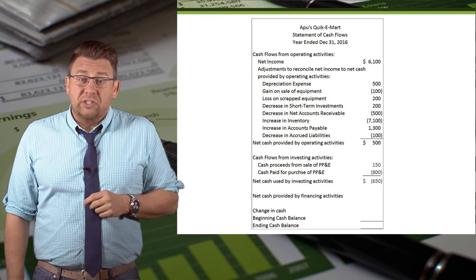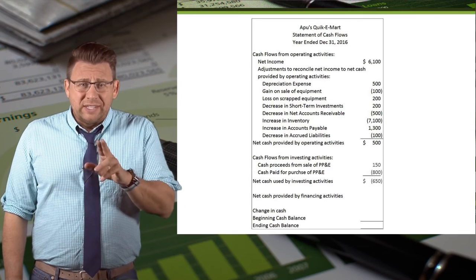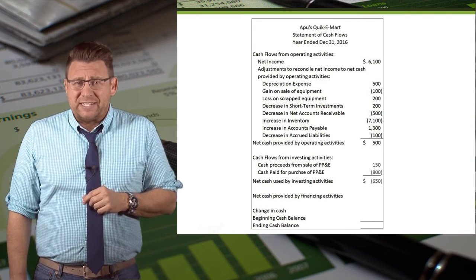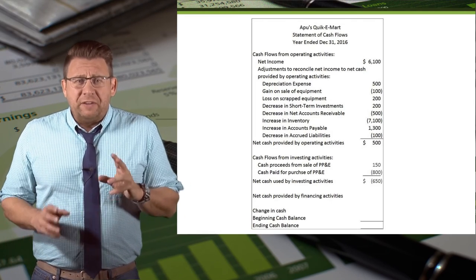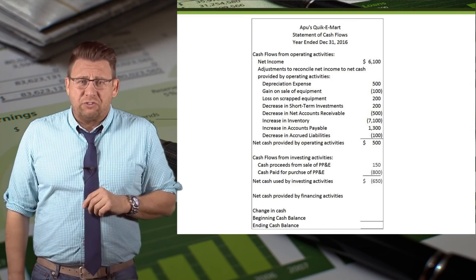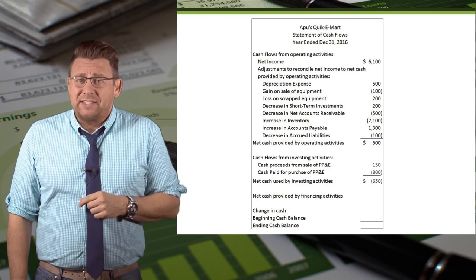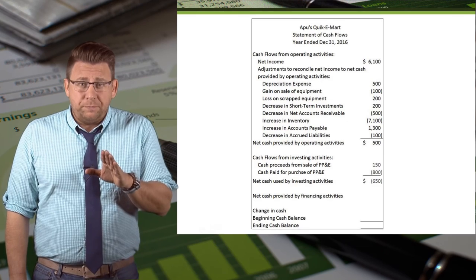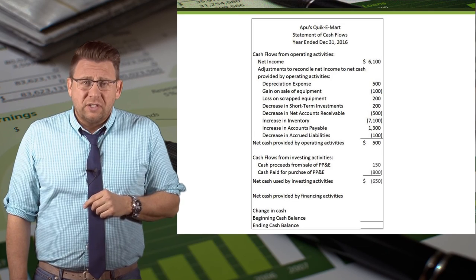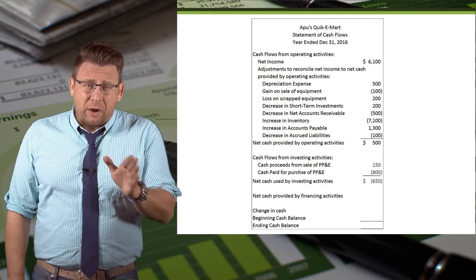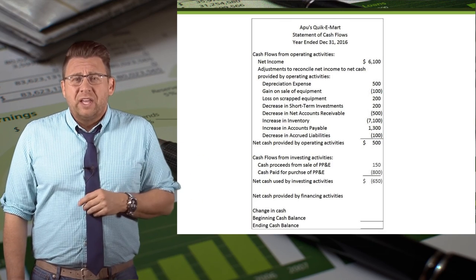Here's what the Statement of Cash Flows looks like after completing the Operating and Investing Activities sections. You can see that we have negative net cash flow from investing activities of $650. Don't be alarmed by this — investors and creditors expect to see negative cash flows in this section. Negative cash flows mean a company is buying more fixed assets than it's selling. Positive cash flows could mean a company is selling fixed assets to help with cash flows, which could be a problem if it's happening a lot. Please watch the Financing Activities section to see the Statement of Cash Flows completed.